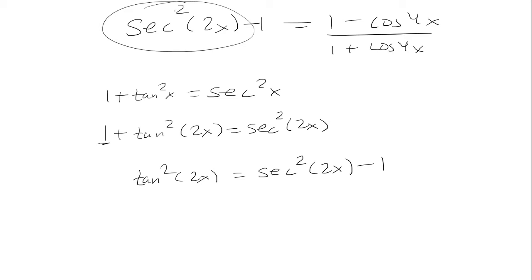So I'm going to substitute secant squared 2x minus 1 with tangent squared 2x. And I'm going to write tangent as sine over cosine, but it's going to be squared because it's tangent squared.